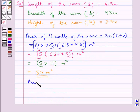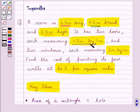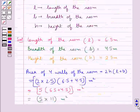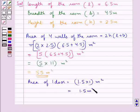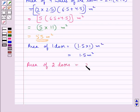Next, let's find out the area of 1 door. It is given that 1 door measures 1.5 meters by 1 meter, so the area of 1 door equals 1.5 into 1 = 1.5 meter squared. Since we have 2 doors, the area of 2 doors equals 2 into 1.5 = 3 meter squared.